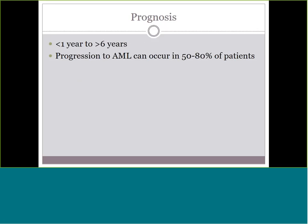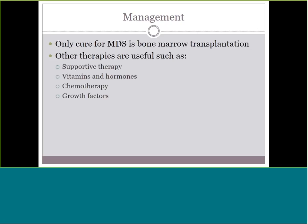Prognosis for all MDS disorders is very poor — not good survival rates. Survival can be up to six years, but at any point it can progress to acute leukemia, which occurs in 50–80% of cases. The only cure for myelodysplastic syndromes is a bone marrow transplant, and that's only if the patient is young and healthy enough to qualify. Otherwise, supportive therapy is given: platelet transfusions if counts drop too low, red cell transfusions if needed, along with hormones and chemotherapy to try to eliminate the abnormal stem cells.